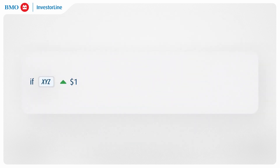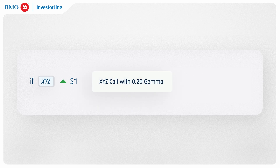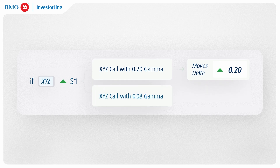For example, consider XYZ Corporation's stock rising by $1. A call option with a gamma of 0.20 would see its delta increase by 0.20, all else being equal. Conversely, a call option with a gamma of 0.08 would see an increase of 0.08 in its delta under the same conditions.